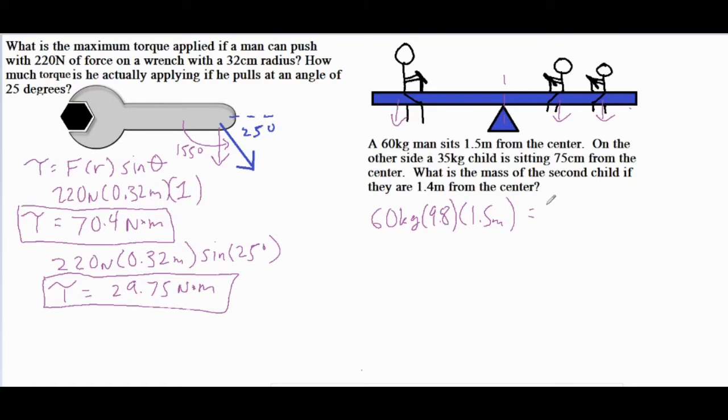So we know that one of the kids is 35 kilograms, and we would multiply that by 9.8 to convert that to a force. And then that first kid is 0.75 meters from the center. Again if it's 75 centimeters we want to divide it by 100 and convert it to 0.75 meters. In addition we want to make sure we add the torque of the second child. The second child has an unknown mass which we'll call m, times 9.8, and then their distance from the center is 1.4 meters.